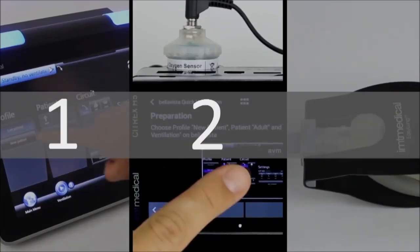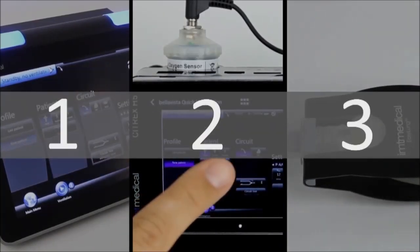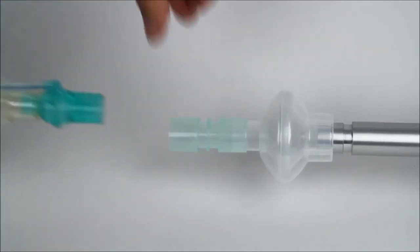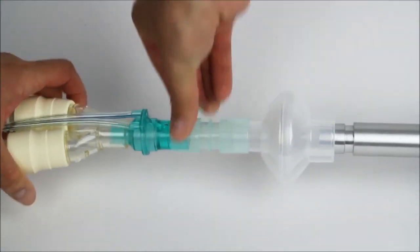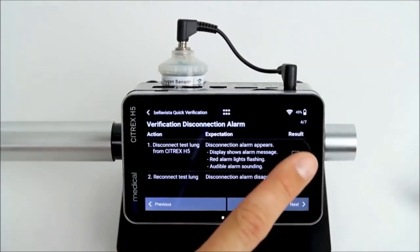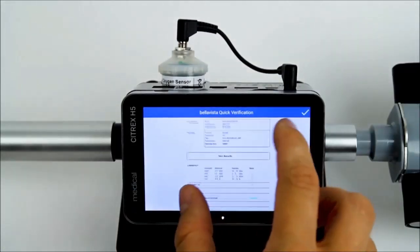The app guides you through the following three simple steps. First, connect the Citrix H5 to a ventilator. Second, perform verification. And finally, generate a test report.